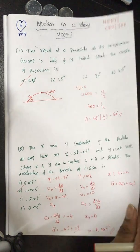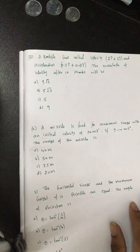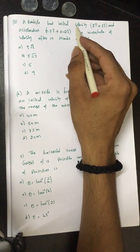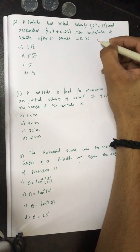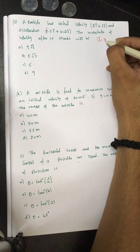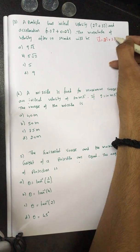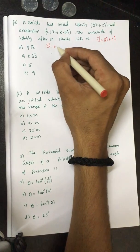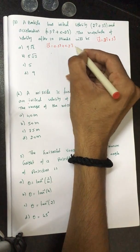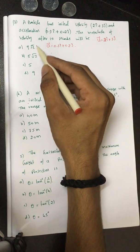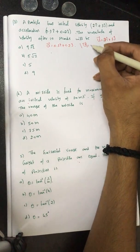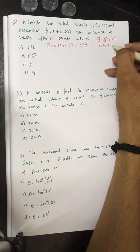We have one more problem, again on motion in a plane. A particle has initial velocity 2 i-cap + 3 j-cap, and acceleration 0.3 i-cap + 0.2 j-cap. They ask what is the magnitude of the velocity at time t = 10 seconds.